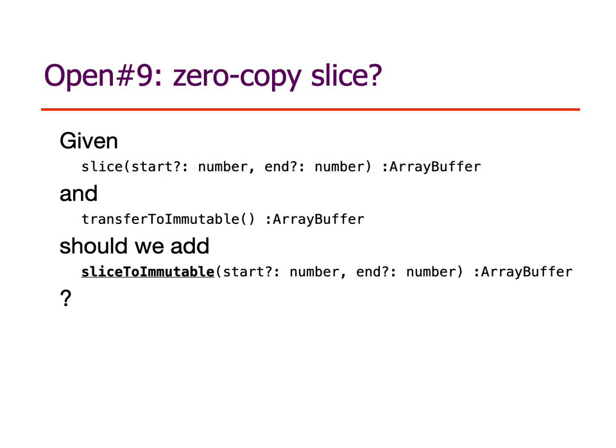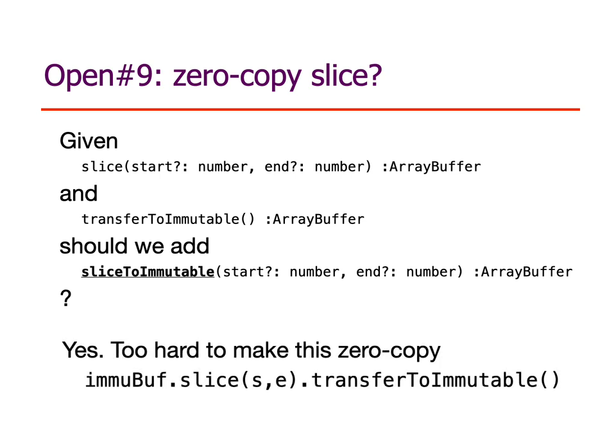Should we add a zero-copy slice method? Right now we have slice and transferToImmutable, which can be composed to get an immutable slice. If we have an immutable buffer and want an immutable slice into it, we can take a slice and then do a transferToImmutable on the slice. But this technique for getting that effect is very hard to make zero copy. So the proposal would be to add a new method, sliceToImmutable, whose semantics is exactly the same as that composition, but with the implementation expectation that the new array buffer is a zero-copy window into the original.